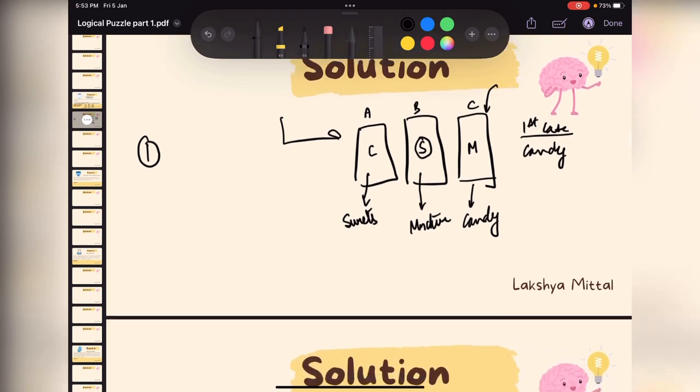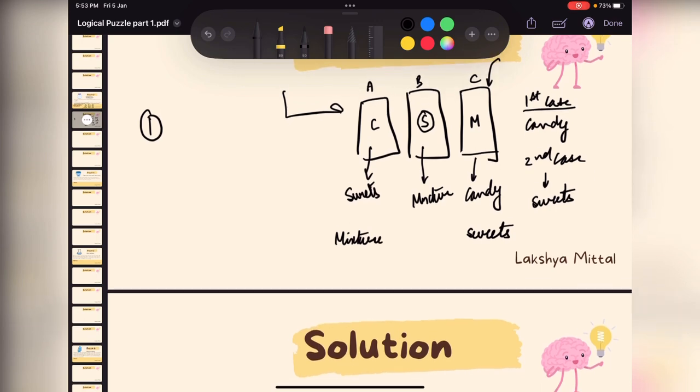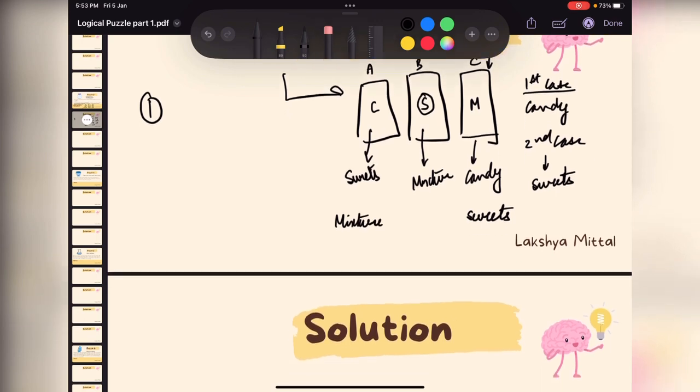Now in the second case, we can get sweets. So if in our second case, the sweets come out, here we will put sweets and here we will put mixture because initially it was labeled as candy. Now sweets are already labeled so it has a choice and here we will put candies so we can correctly label it.